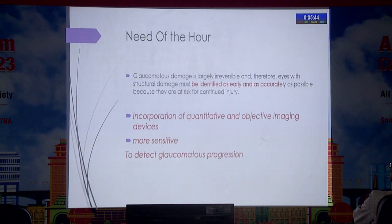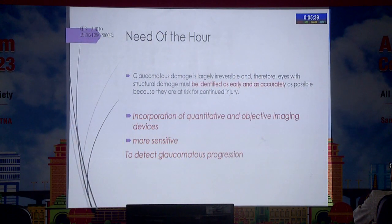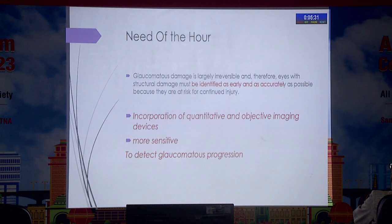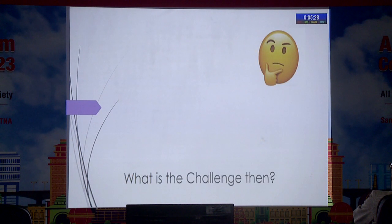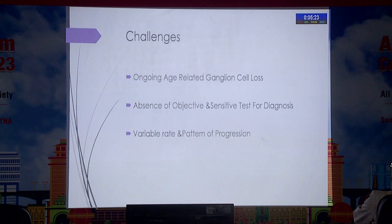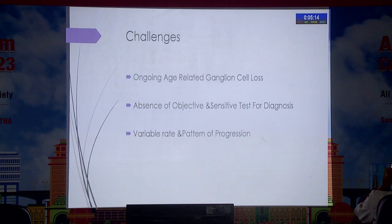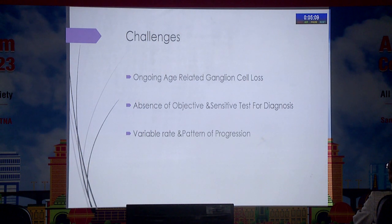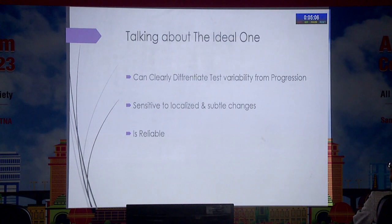The need is to identify disease progression as early as possible and as accurately as possible, with the help of quantitative and objective imaging devices which are more sensitive to detect subtle changes. The challenge is the ongoing age-related ganglion cell loss, the inadequate number of objective and sensitive tests for diagnosis, and the variable rate and pattern of progression that needs to be monitored at all times.